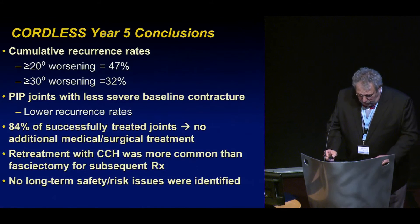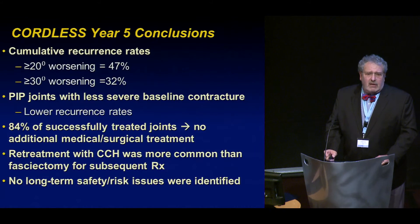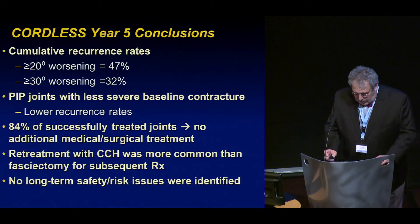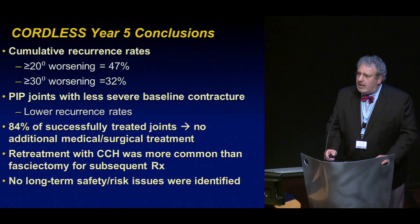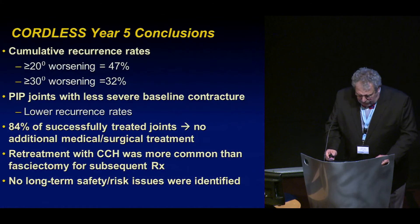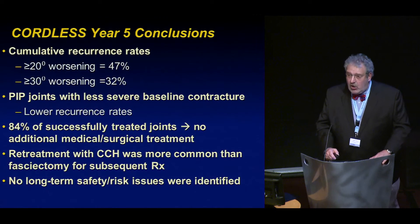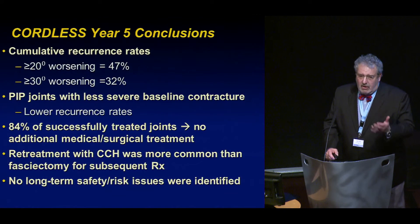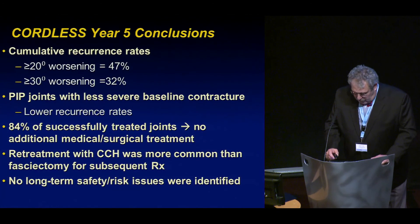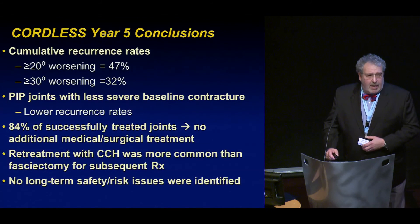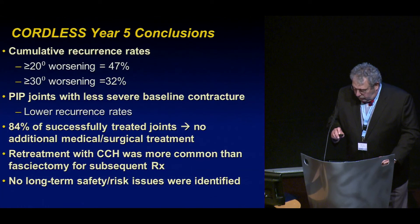Conclusions: recurrence overall, using the 20-degree criteria, is 47%; using the 30-degree criteria, it's 32%. PIP joints that start out with less severe contractures do better. Eighty-four percent of successfully treated joints had no additional treatment, which is encouraging. Retreatment with CCH was more common than fasciectomy once it became commercially available, and there were no serious long-term risks identified.